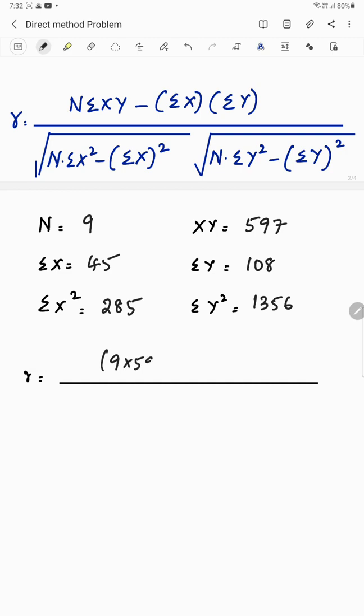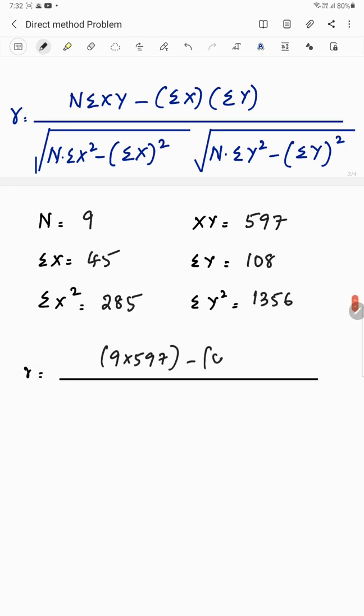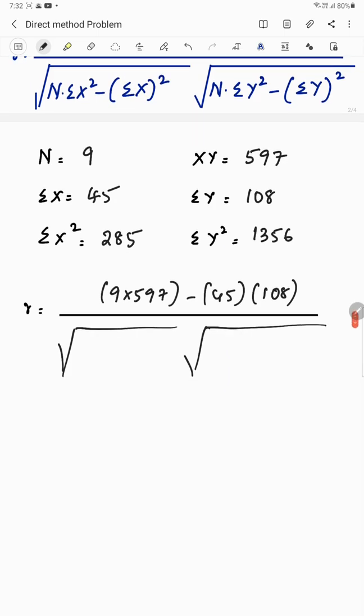9 into 597 minus 45 into 108 divided by, don't forget this under root. This under root is something which we forget when we are quickly very much involved and we do the problem. Most of the times we forget the values. So carefully, this one also be very careful when you are putting summation x whole square.